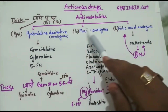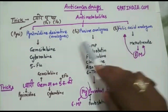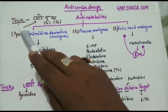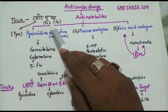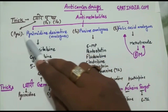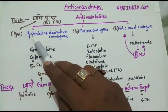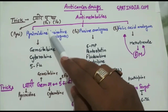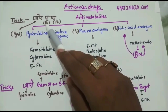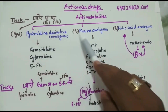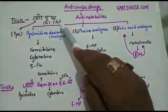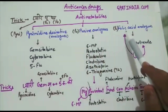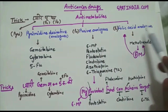These three categories can be learned by a very simple trick. 'Pyrimidine' repeated equals purine analogs, and 'fo-fa' is equal to folic acid analogs.